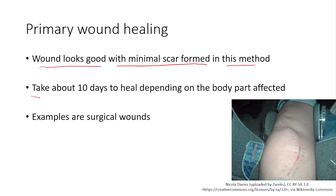Primary wound healing takes about 10 days depending on the body part affected and the blood supply to that area. An example is surgical wounds — this is an example of a surgical wound that healed by primary wound healing after the edges were approximated and stapled.